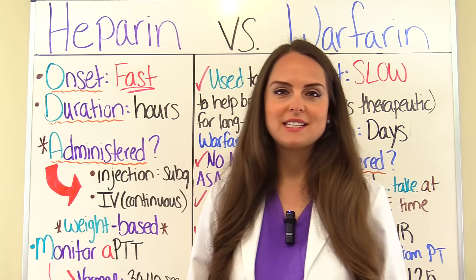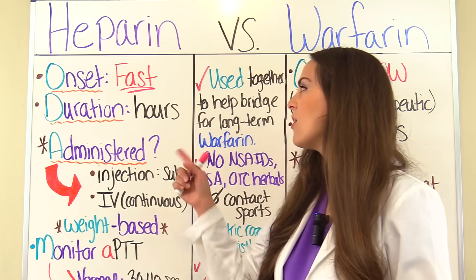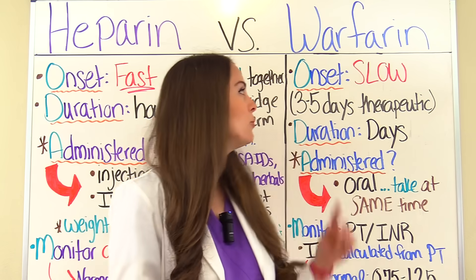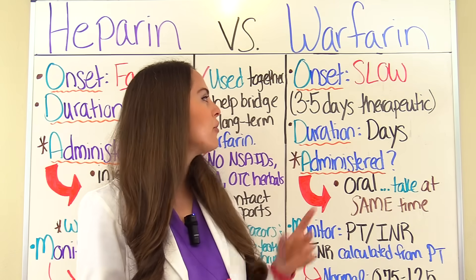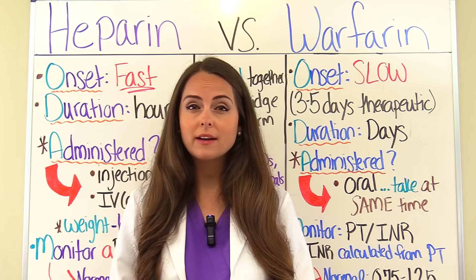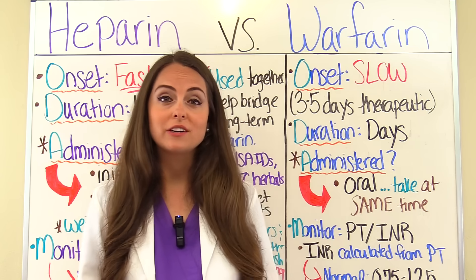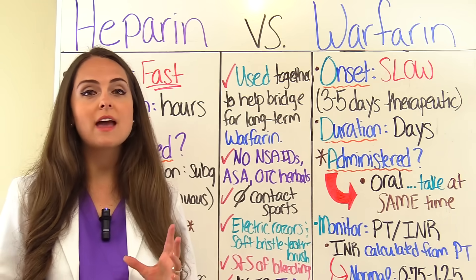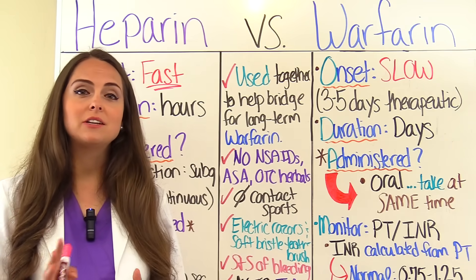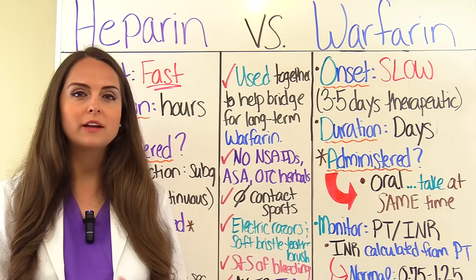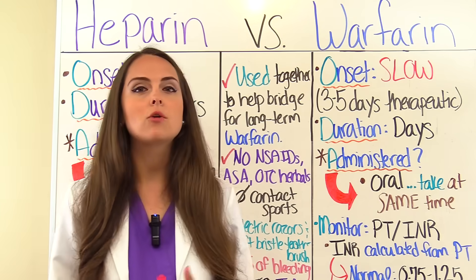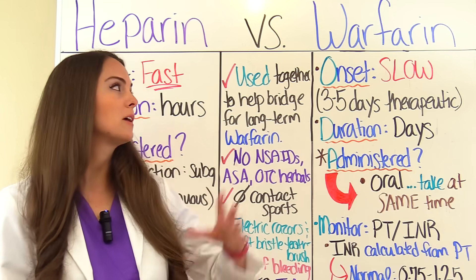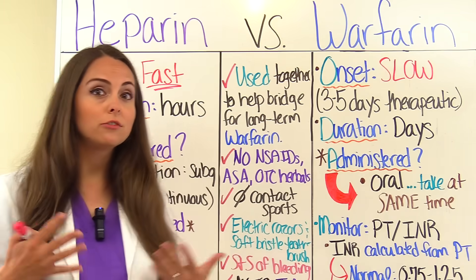Now let's talk about the differences between heparin and warfarin. First is onset — heparin's onset is fast compared to warfarin, whose onset is slow. It takes about three to five days for a patient to become therapeutic on warfarin. This is why these two medications will be used together for a period of time: a patient will be on a continuous heparin drip while also taking warfarin, because warfarin takes a while to start working. Once the patient becomes therapeutic with their INR level, the heparin will be discontinued.